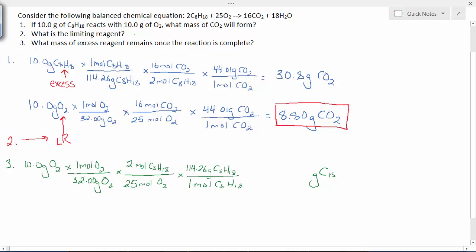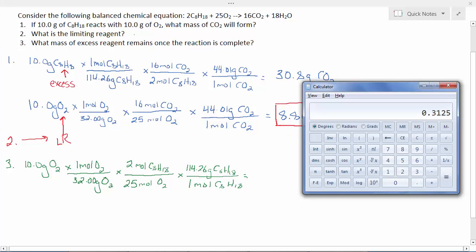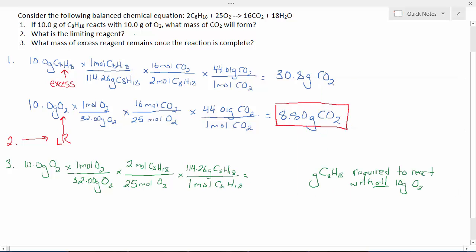The setup here will yield grams of C8H18. This is the amount of octane required to react with the 10 grams of O2 - what completely consumes the O2. However much comes out of this is the amount required to produce the 8.80 grams of carbon dioxide. At this point, this is just a calculator problem. I need 2.86 grams of C8H18.